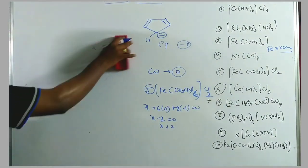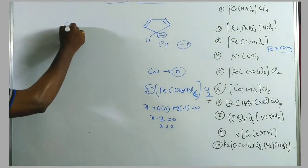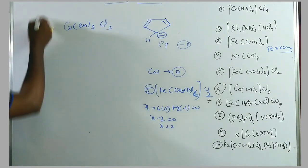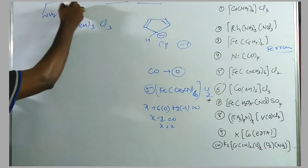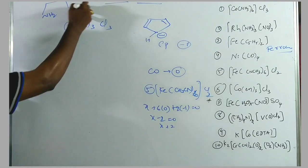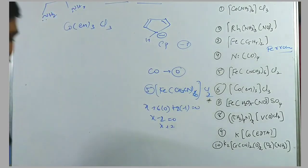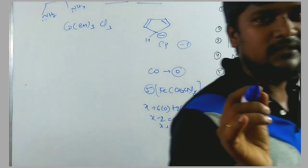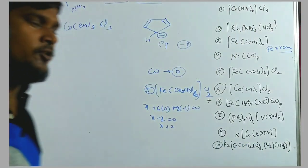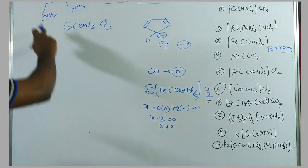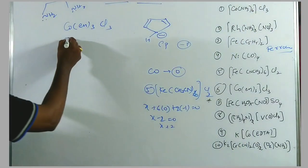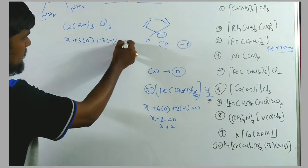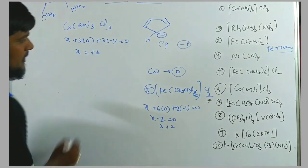Sixth example: [Co(en)₃]Cl₃. Ethylene diamine has two donor nitrogen atoms with lone pairs; charge over the ligand is 0. So: X + 3(0) + 3(−1) = 0, therefore X = +3.